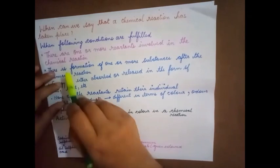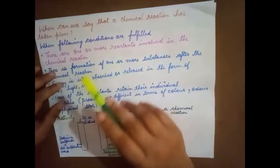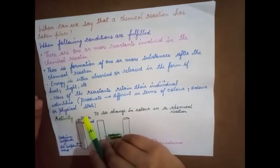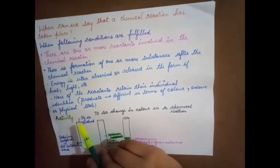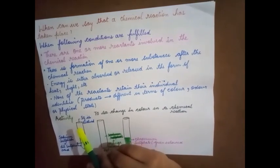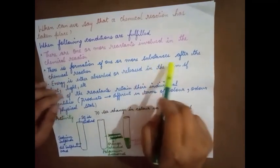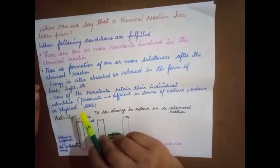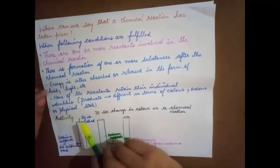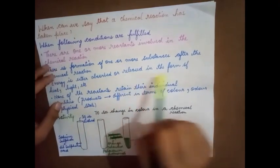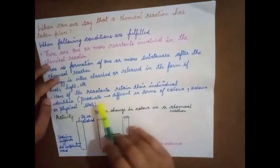First, there are one or more reactants involved in the chemical reaction. Second, there is formation of one or more substances after the chemical reaction — the product formed may be one or more than one. Third, energy is either absorbed or released in the form of heat and light.